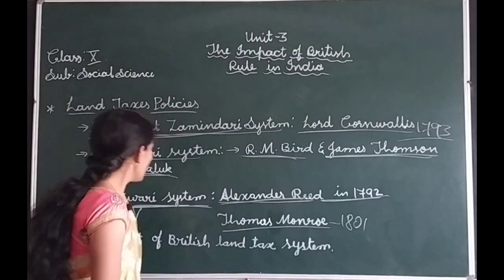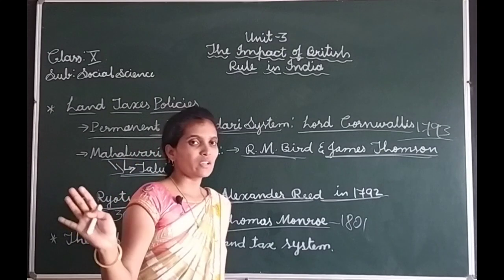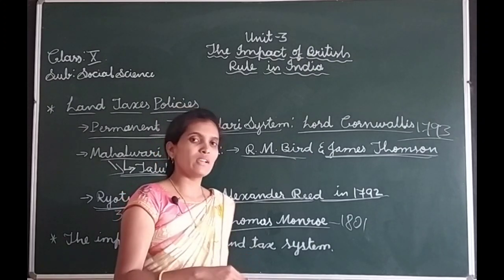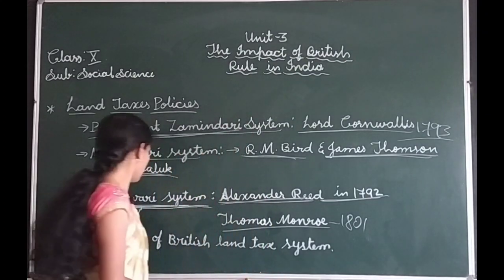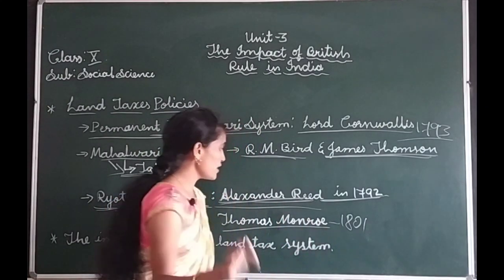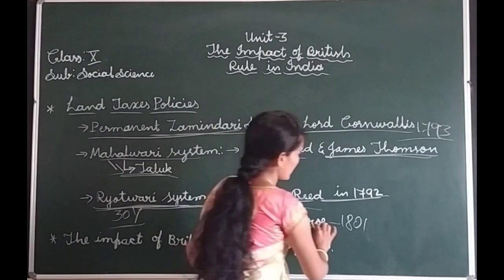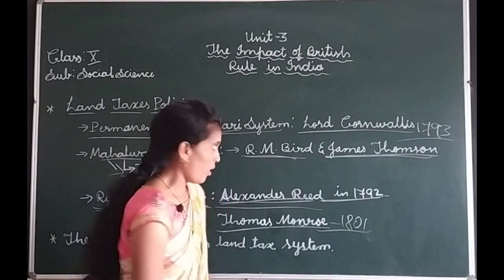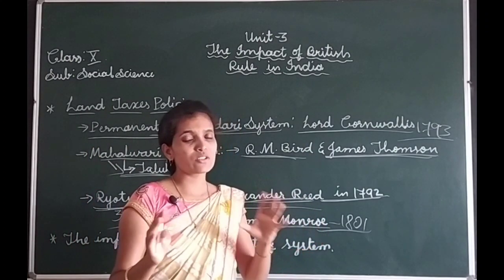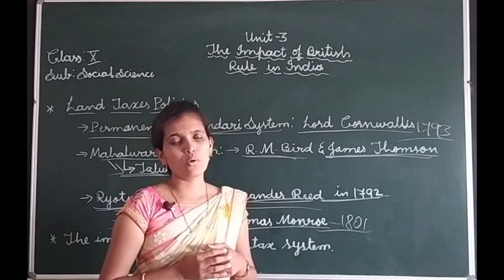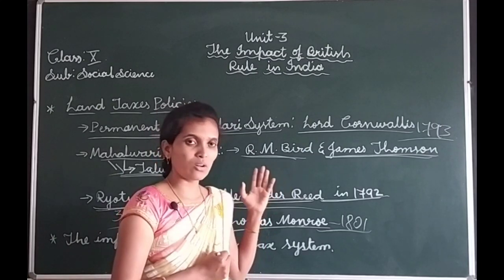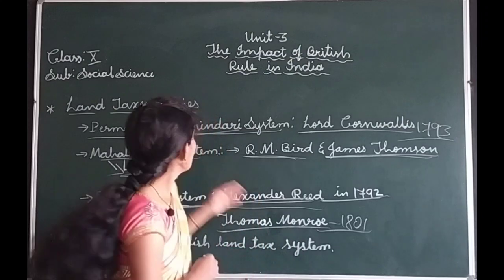So, according to the Raitawari System, farmers only paid land taxes directly to the company. There were no Zamindars as mediators between the farmers and the company. The total period was 30 years. It was introduced by Alexander Reed in the year 1792 in the Baramahal region in Tamil Nadu, and later implemented systematically by Thomas Munro in the year 1801 at Madras. As a result, by all three land taxes, Indian farmers faced a lot of problems because they paid most of the tax to the British East India Company, while the company and Zamindars became rich.